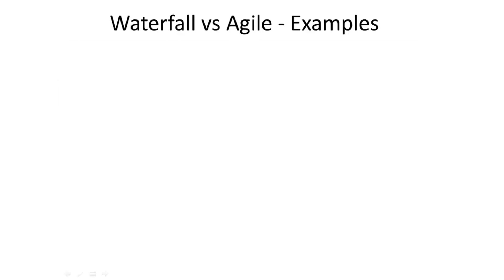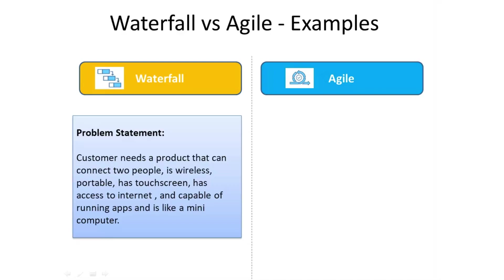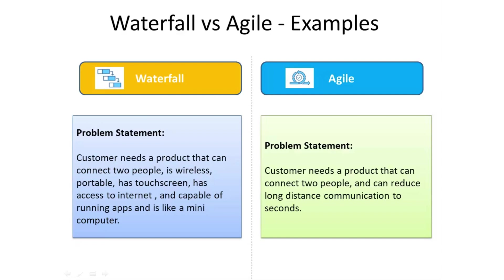Let us understand both methodologies with examples. For Waterfall: a customer needs a product that can connect two people, is wireless, portable, has a touchscreen, has access to the internet, and is capable of running apps — a mini-computer with computing capabilities. For Agile: a customer needs a product that can connect two people and reduce long-distance communication to seconds.